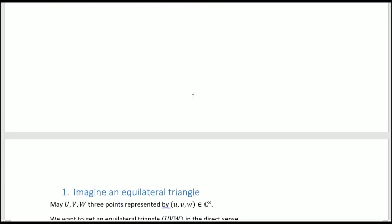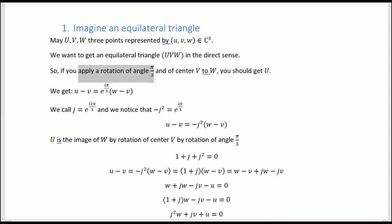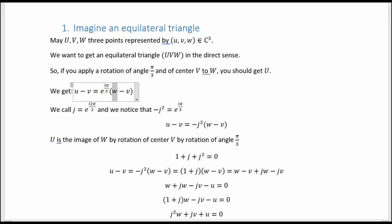At first, I'm going to imagine an equilateral triangle. Let U, V, and W be three points represented by complex numbers in the complex plane, where the imaginary part is one axis and the real part is another axis. We assume that it's equilateral in the direct sense. So if you apply a rotation of angle π/3 and of center V to the point W, you should get U, because it's an equilateral triangle. So you get that U minus V equals this rotation applied to W minus V.